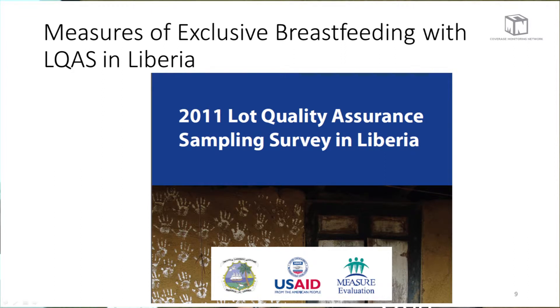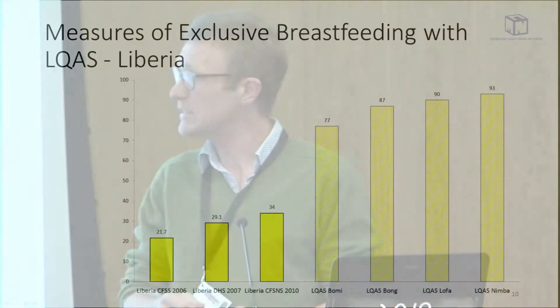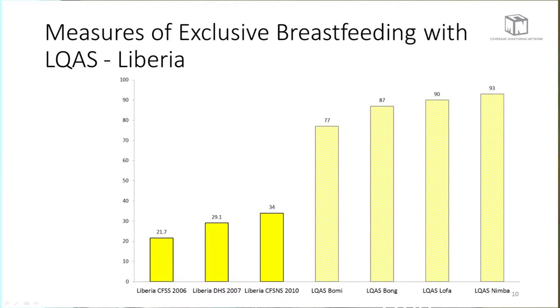I want to look at the measures of exclusive breastfeeding with LQAS in Liberia. This is a 2011 survey done with USAID support by Measure Evaluation. Looking at these results, the national level results from different surveys range from 22 to 34 percent. But when we look at the county-level results from the LQAS estimates, they range from 77 to 93 percent — two to three times higher than the results from the national surveys.